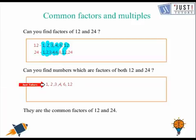All these numbers that we have listed here are called the common factors between 12 and 24. So factors that are common between two given numbers, we call them common factors.